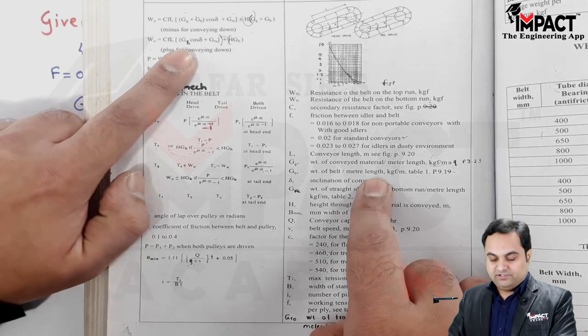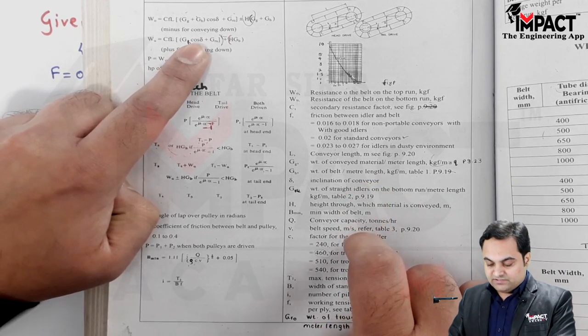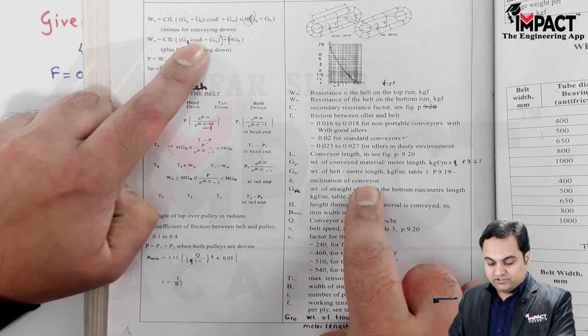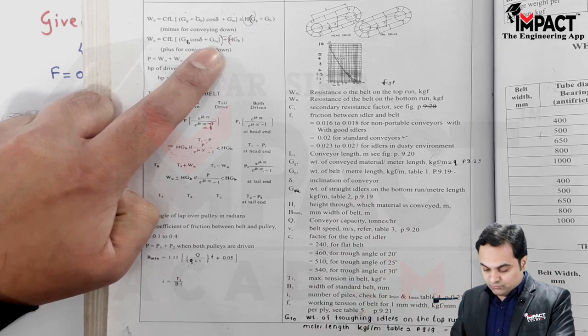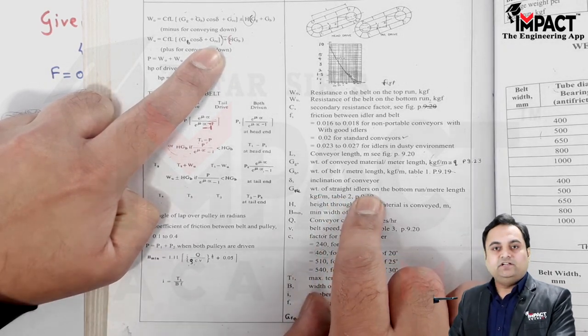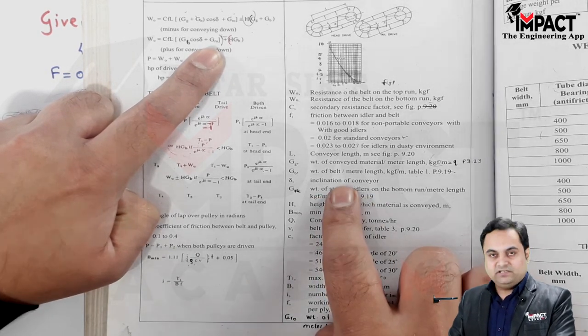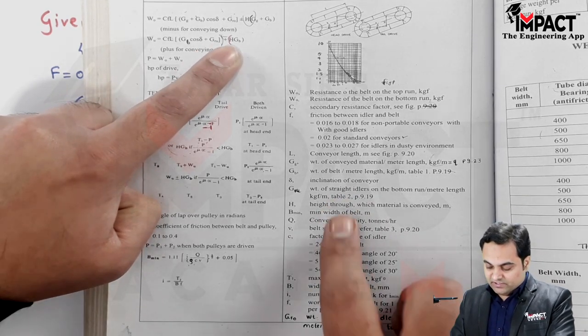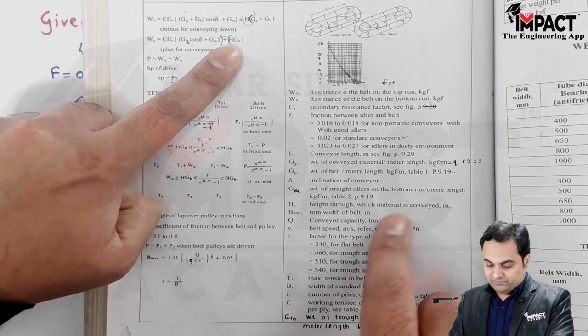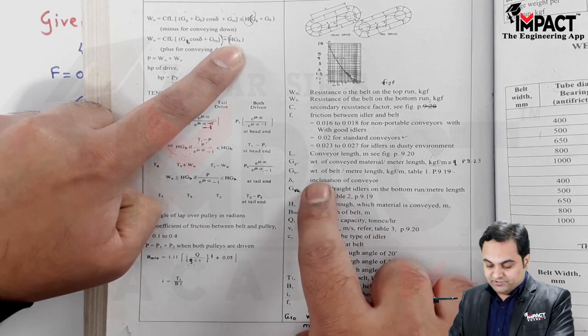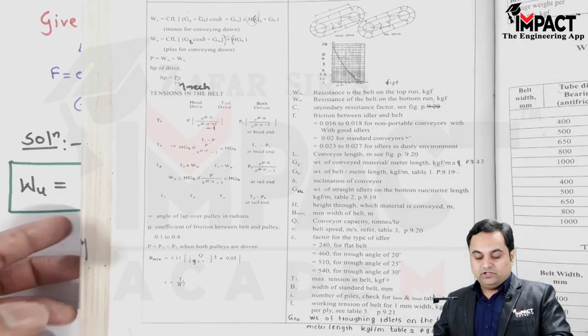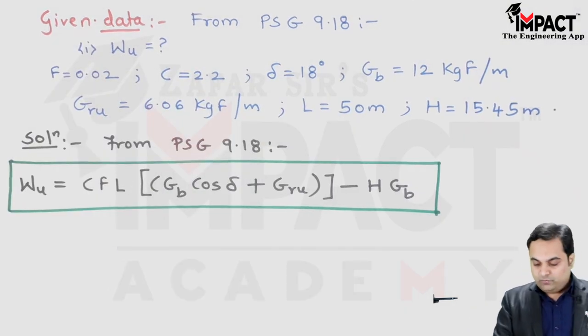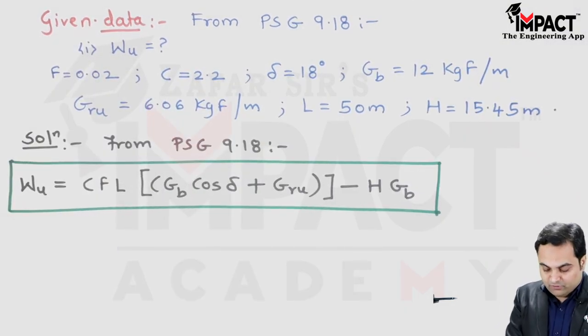...which is the weight of the belt per meter length. Delta is the inclination angle of the conveyor. G suffix ru is the weight of the straight idlers - on the bottom run we have straight idlers, on the top run we have troughing idlers. Minus H is the conveying height. G suffix b again is the weight of the belt per meter length. Now when we know all the values, we can put them in this formula.